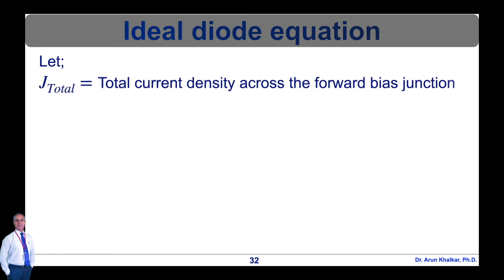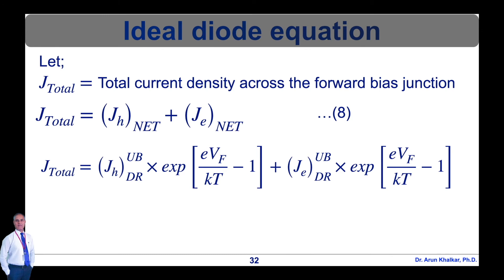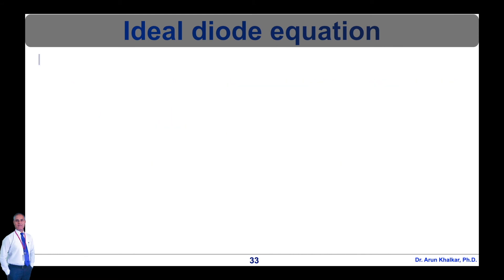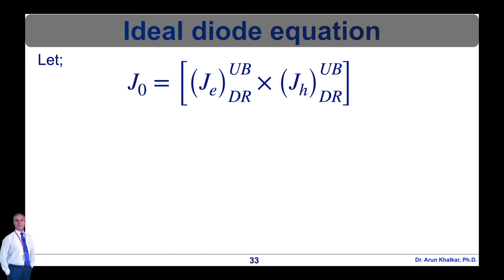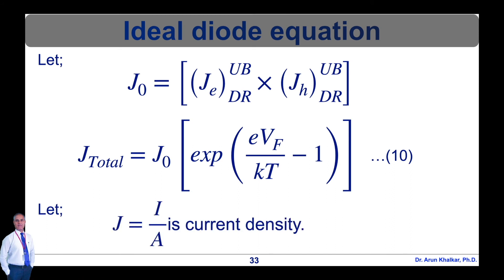Let J_total be the total current density across the forward bias junction. Therefore, J_total = J_H_net + J_E_net — equation 8. This gives J_total = (J_H_DR_UB + J_E_DR_UB) × (exp(eV_F / kT) − 1) — equation 9. Let J_0 = J_E_DR_UB + J_H_DR_UB. Therefore, J_total = J_0 × (exp(eV_F / kT) − 1) — equation 10.